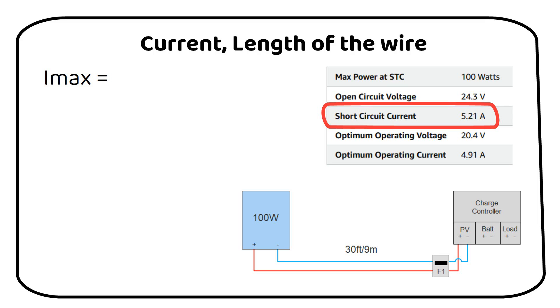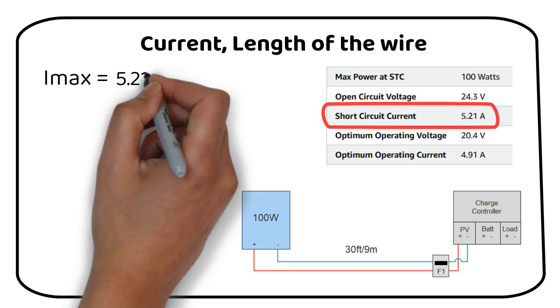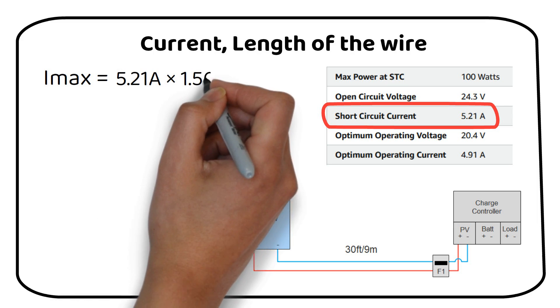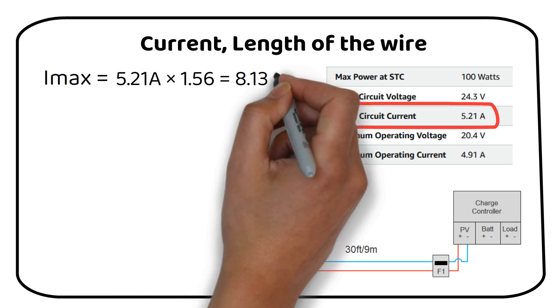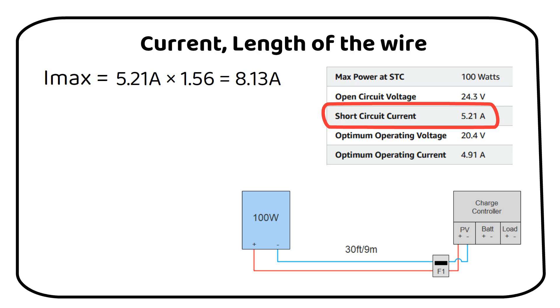So, our calculation for the maximum current, or Imax, through the wire is 5.21 amps times 1.56 equals 8.13 amps. This is the highest possible current that will flow through the wire.